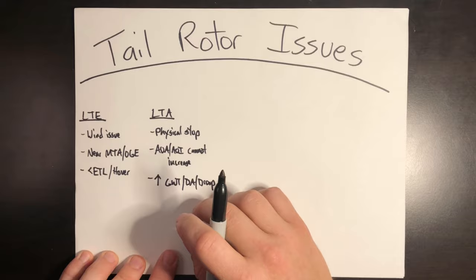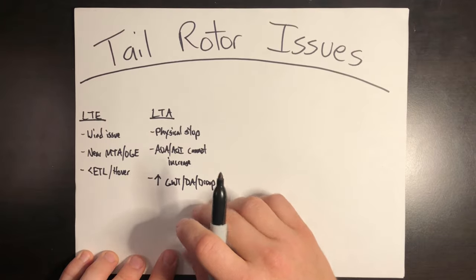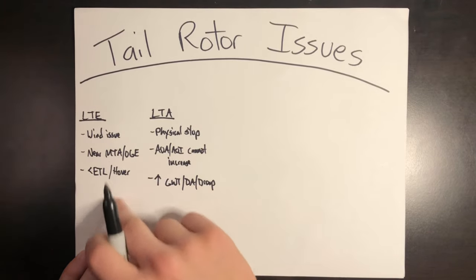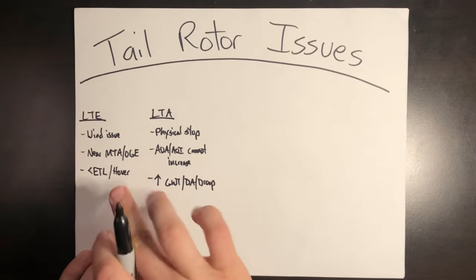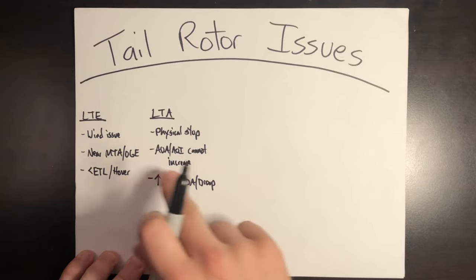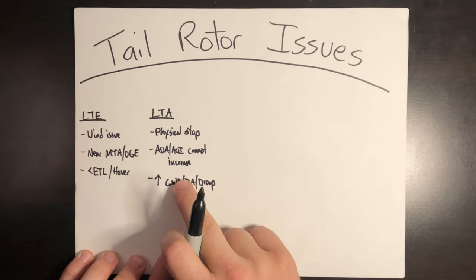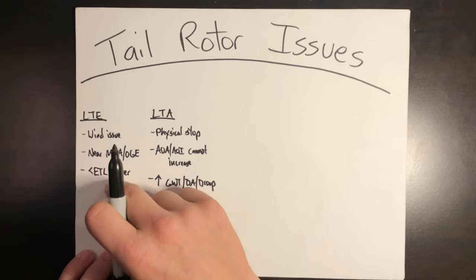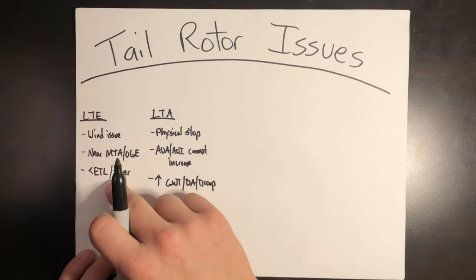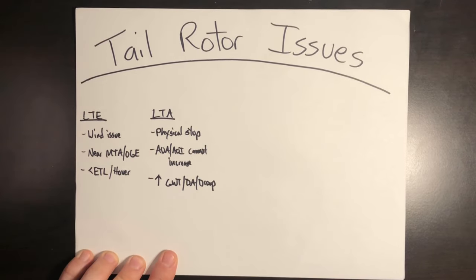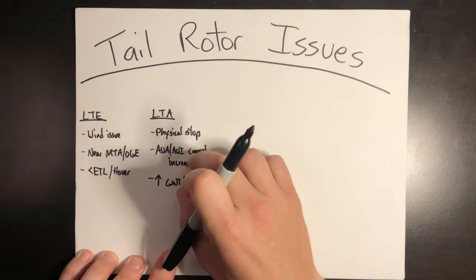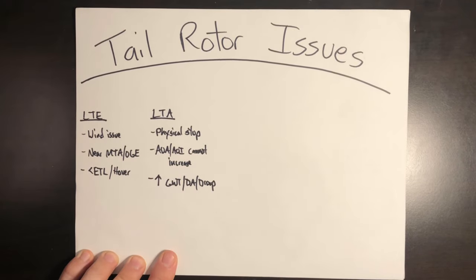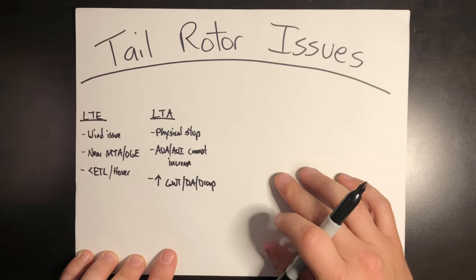This is a mechanical limitation, and some manuals lump this into loss of tail rotor effectiveness. The big distinguishing point here is that LTE is a wind issue, while this is a mechanical issue. Although this mechanical issue can be affected by winds — if they hit just right, you can find yourself running out of pedal — it can also occur without any kind of wind condition. This can be a pure physical stop.